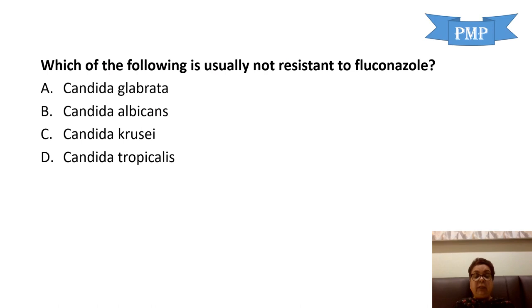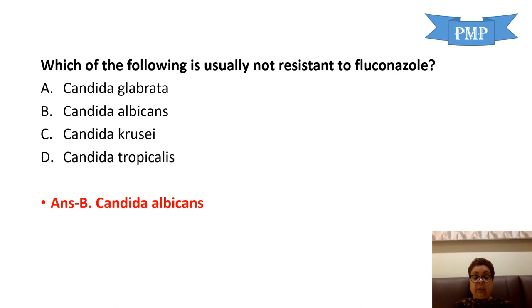Which of the following species of Candida is usually not resistant to fluconazole? Options: Candida glabrata, Candida albicans, Candida krusei, and Candida auris (note: the option listed as tropicalis should be Candida auris). The answer is Candida albicans. Three species of Candida have inherent resistance to fluconazole: Candida glabrata, Candida krusei, and Candida auris (A-U-R-I-S).